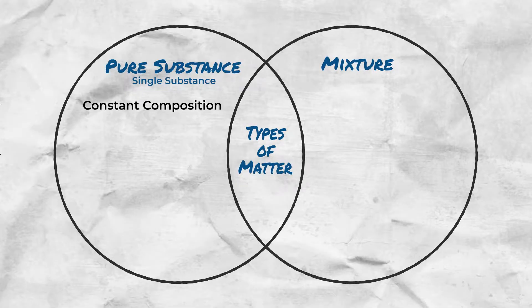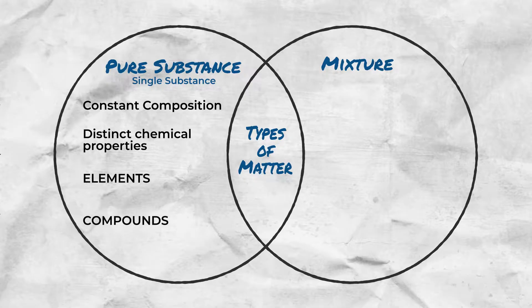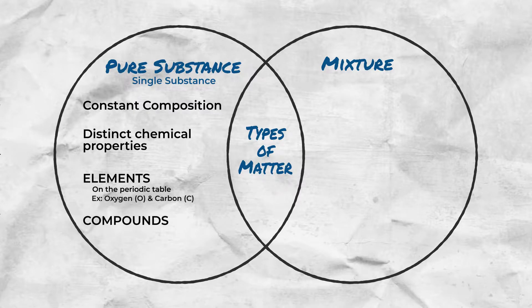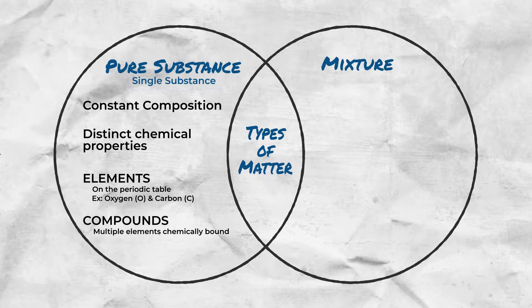A pure substance has a constant composition and distinct chemical properties. Elements and compounds are pure substances. An element is a single substance on the periodic table, such as oxygen and carbon.